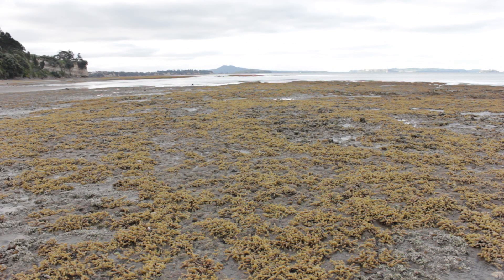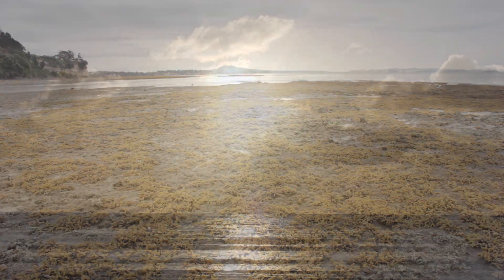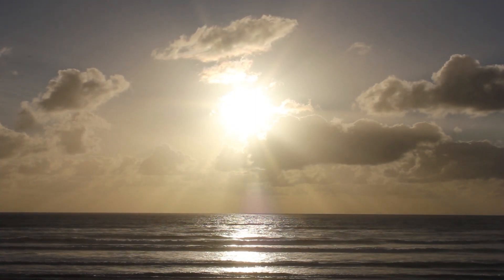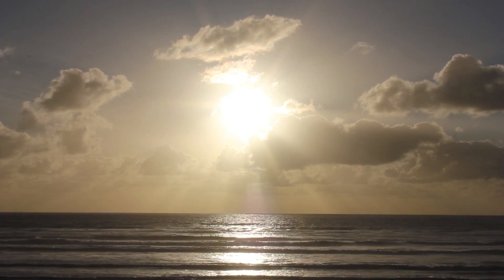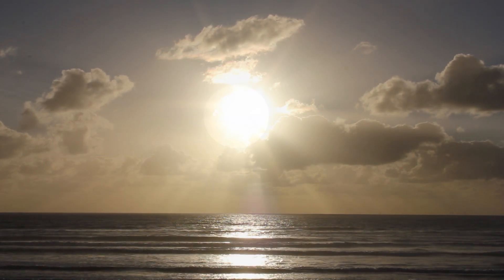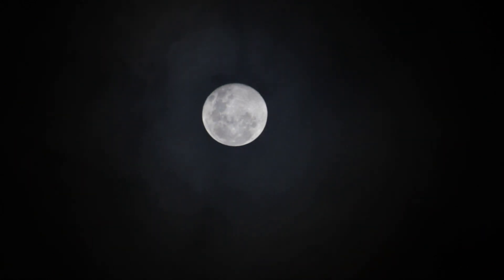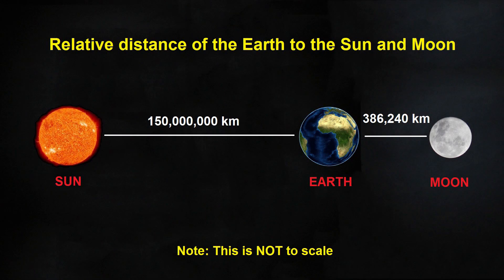Tides are the periodic rise and fall of sea levels caused by the gravitational forces exerted by the Moon and the Sun. Despite the Sun's gravity being 179 times greater than the Moon's, the Moon has a stronger influence on the Earth's tides than the Sun does. That is because the Moon at 386,240 kilometres away is in closer proximity to the Earth than the Sun, which is 150 million kilometres away.